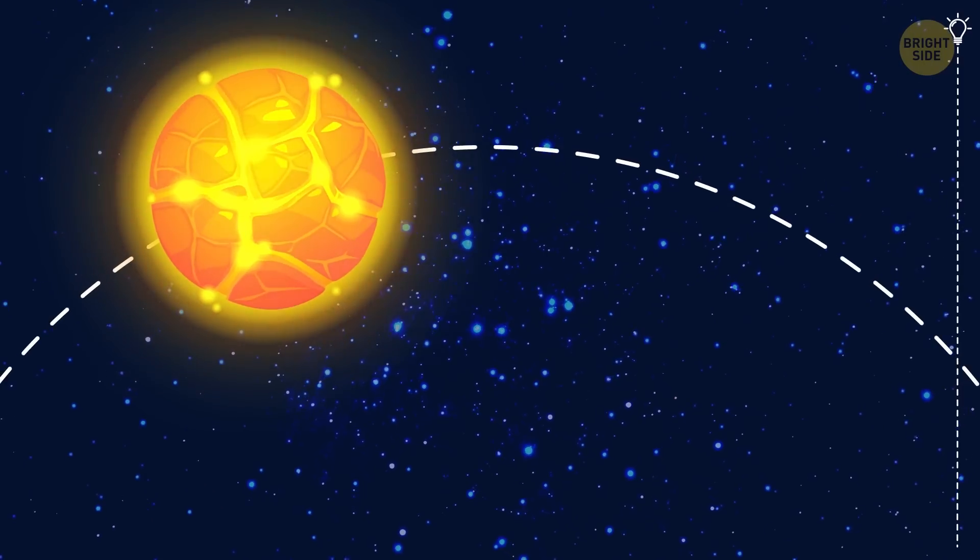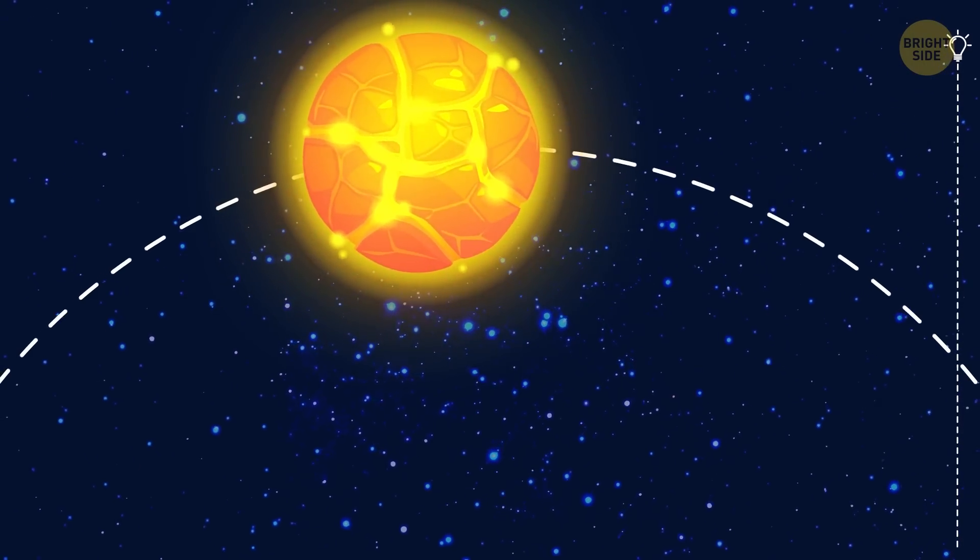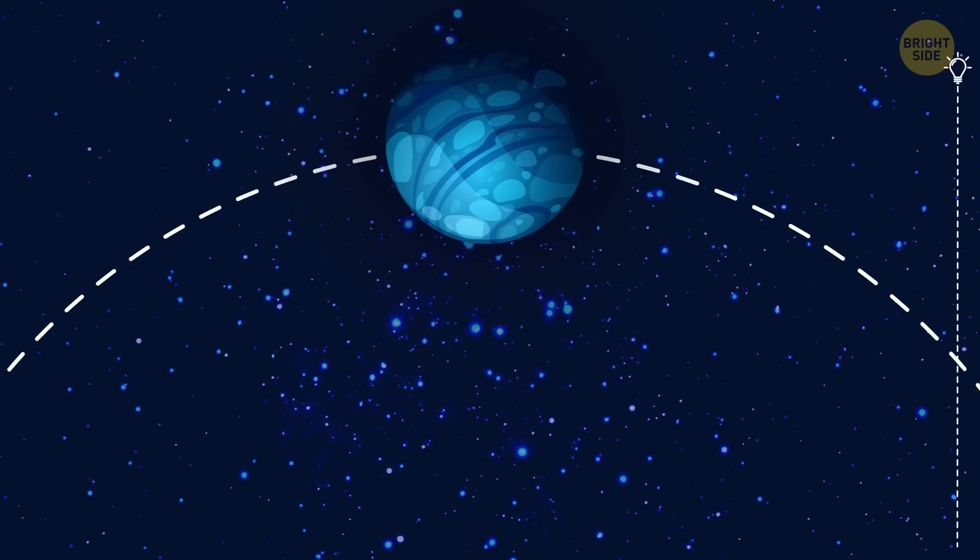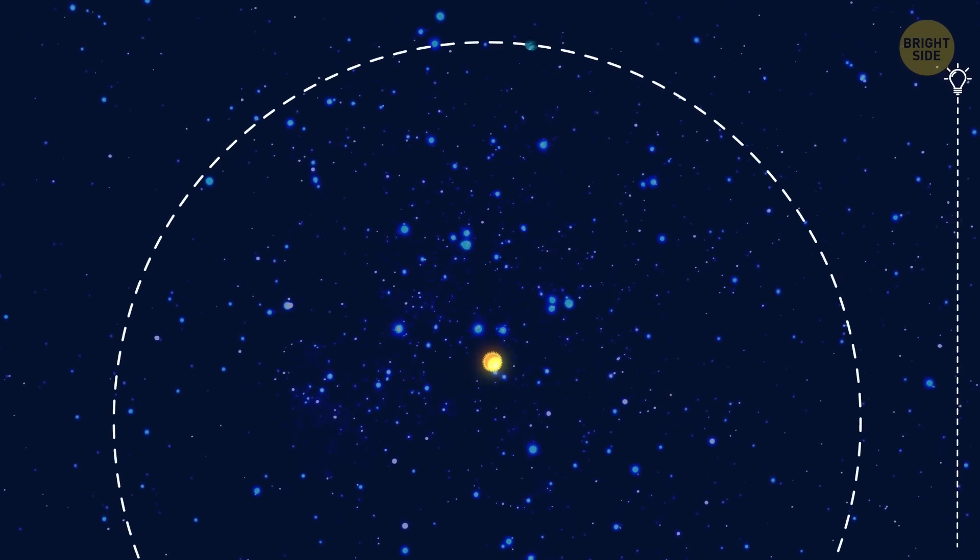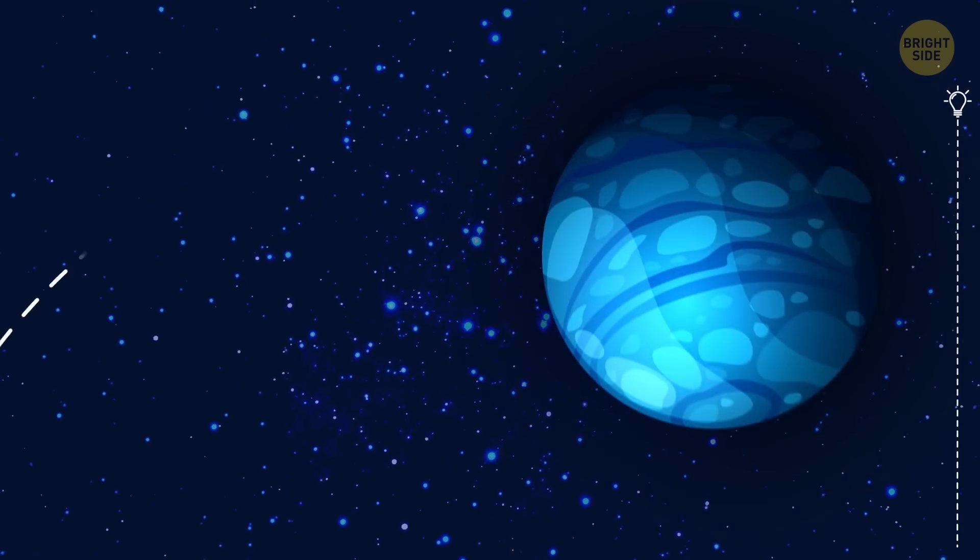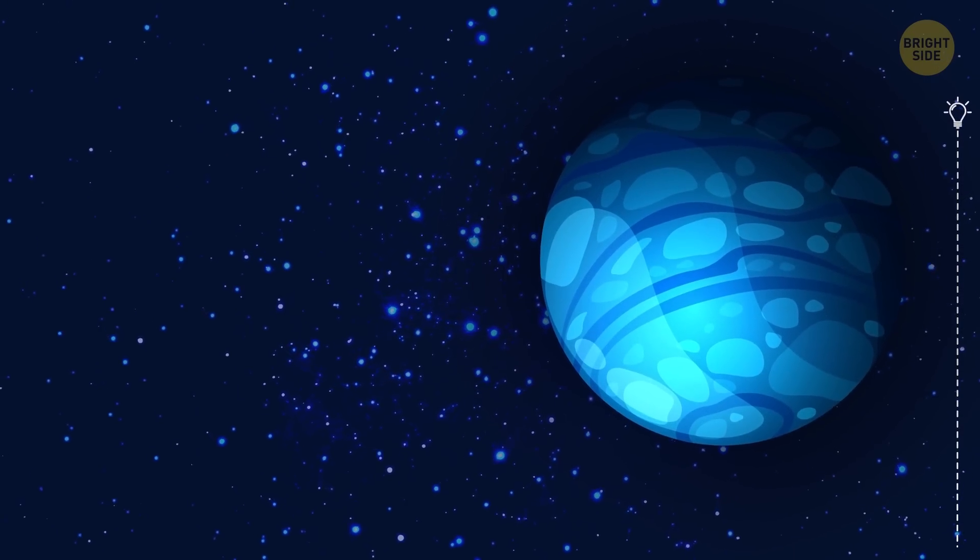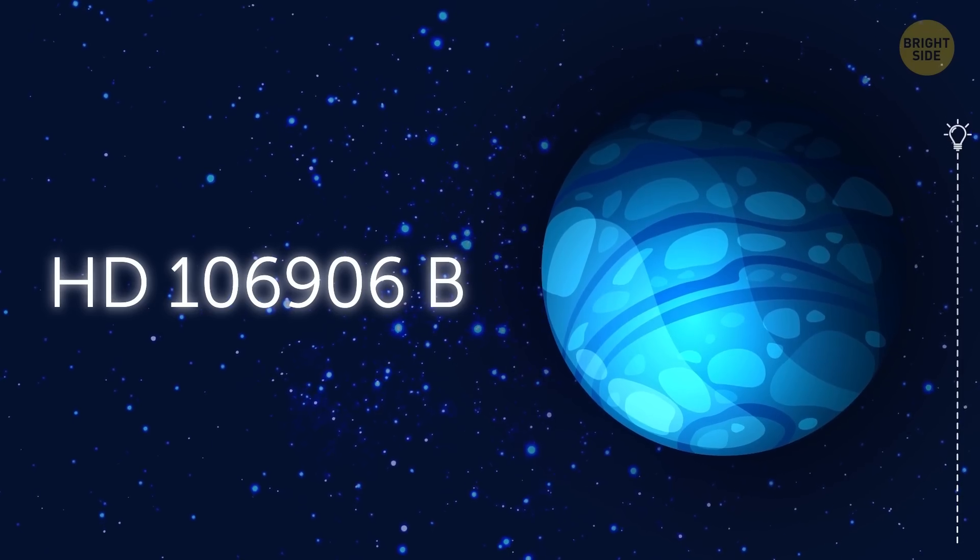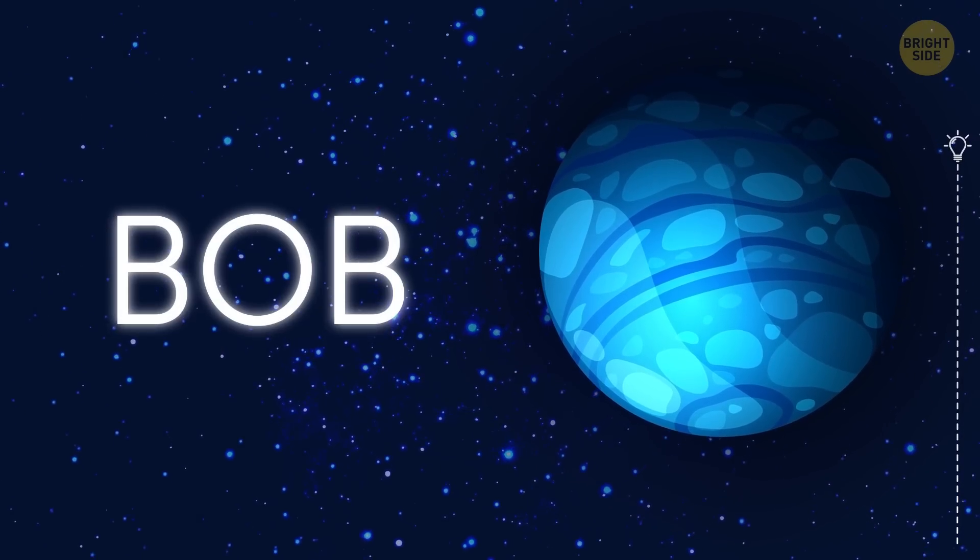Now, let's turn from blazing desert planets at risk of being devoured by their own suns to something really dark. To a planet that's so far from its star, it shouldn't exist. The planet I'm talking about, prepare yourself because it's going to be a mouthful, HD 106906b. For simplicity, let's just call it Bob.